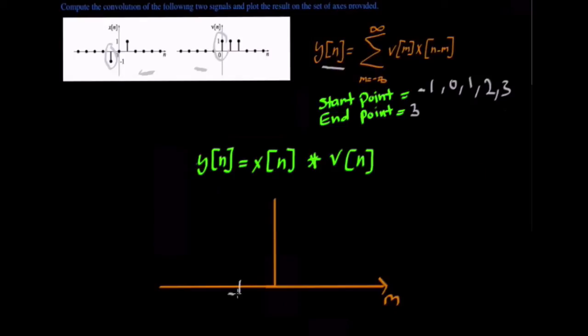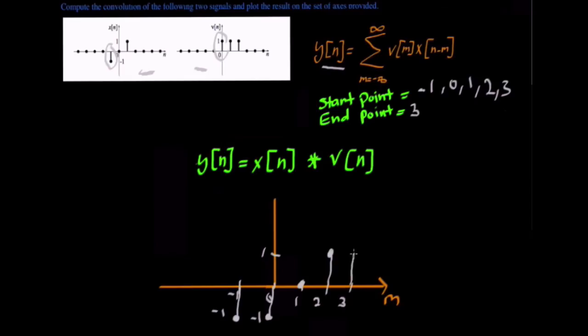So the last step is to plot y of n, which is the output. We basically take the results of y of n at each point and plot them. At negative one we have an amplitude of negative one, at point zero we have an amplitude of negative one, at point one we have zero, at point two we have an amplitude of one, and at point three we have an amplitude of one. Thank you.